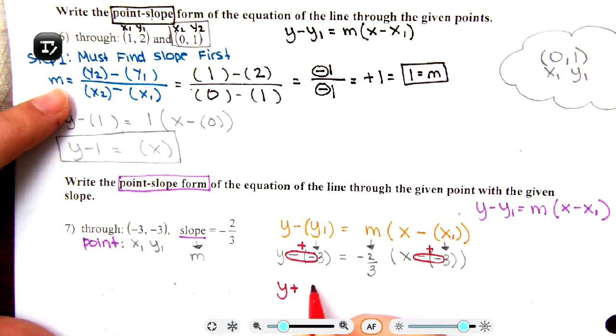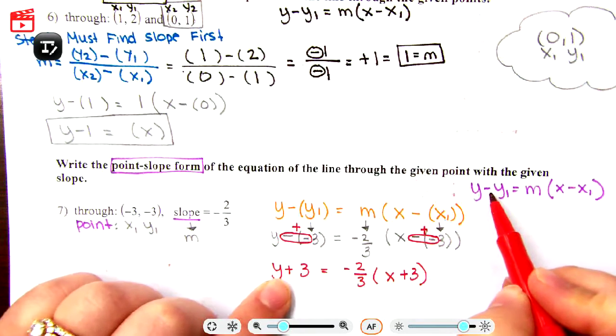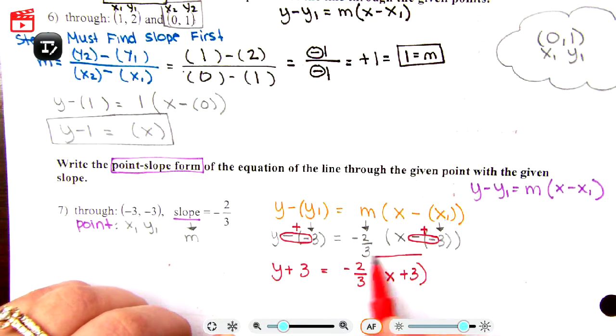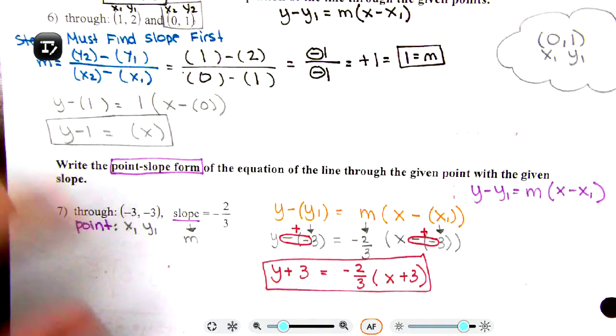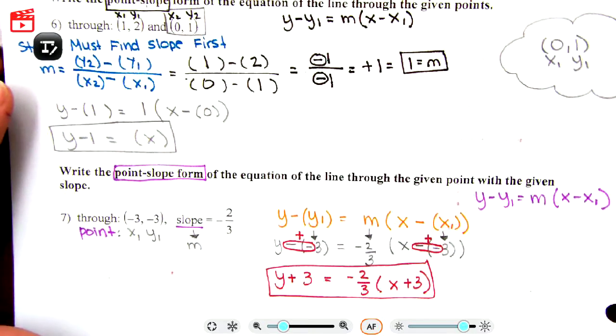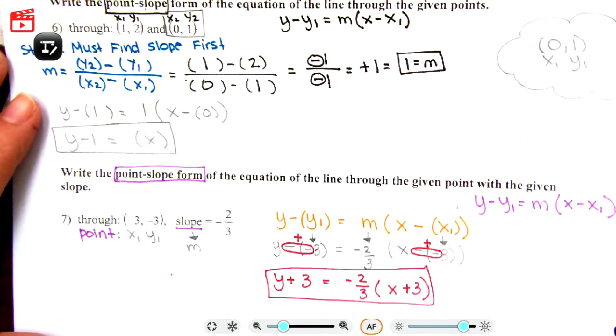Y plus three is equal to negative two-thirds x plus three. Now we have to ask ourselves, is this in point-slope form? Do we have y minus y1 equals m for x minus x1? We do. Although we don't have minuses here, those minuses disappeared when we put in a negative number, so that is okay. This here is in point-slope form. Don't do too much work. Make sure you understand what form your final answer should look like. So this is the answer for number seven.